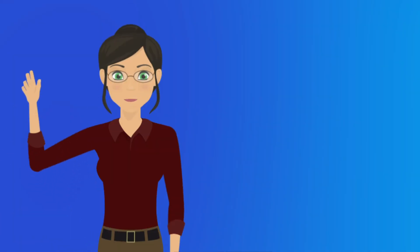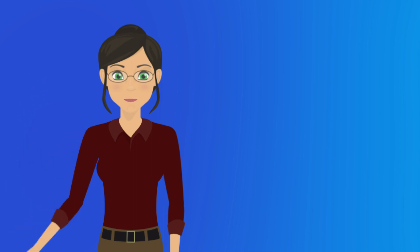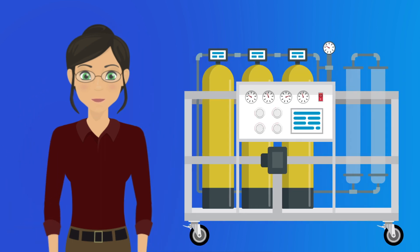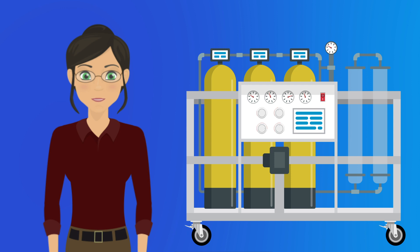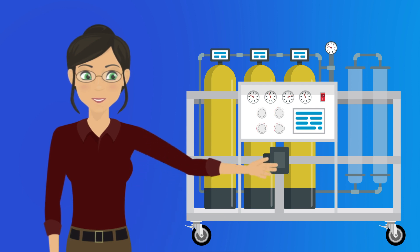Hi, I'm Tara. My company, Genco, makes the best apple juice you've ever tasted. An important part of ensuring our quality is our reverse osmosis system. This skid contains everything we need to clean the water going into our product, removing unwanted particles by pushing fluid through a filter.